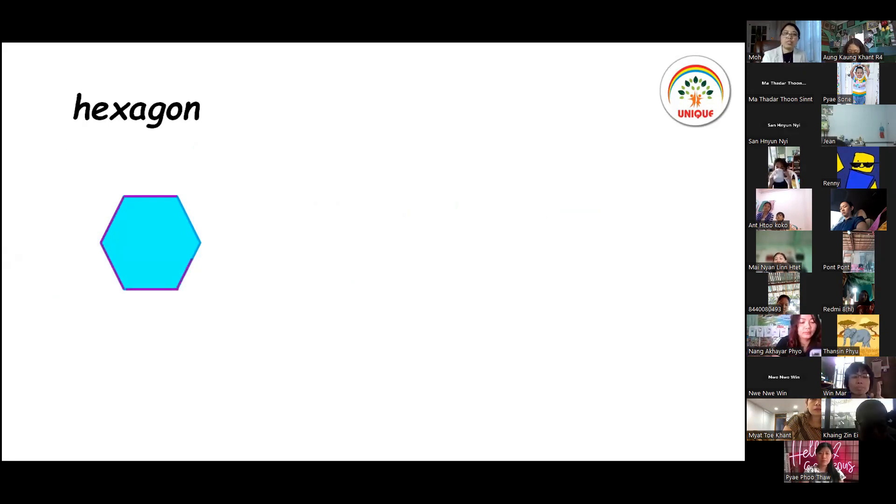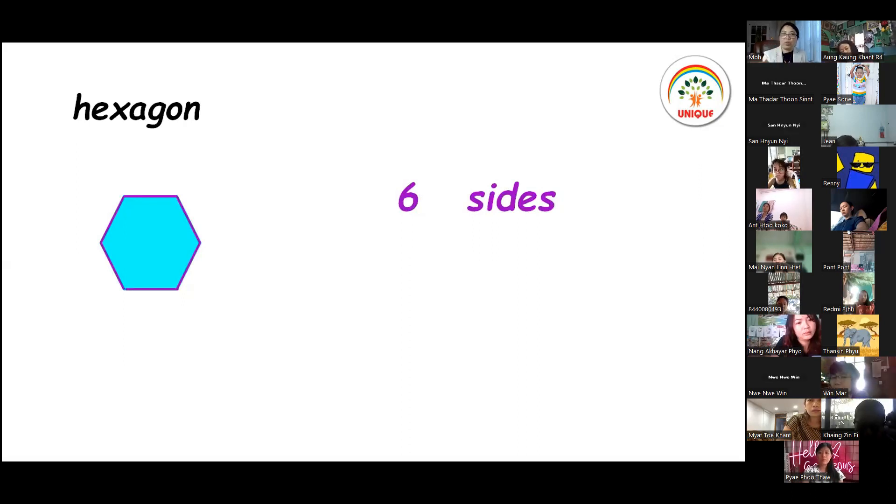Also one, two, three, four, five, six sides. The hexagon has six sides. You can have a regular hexagon or an irregular hexagon, both with six sides.